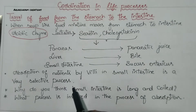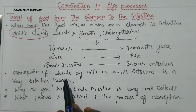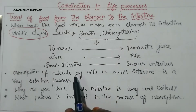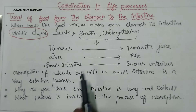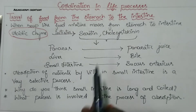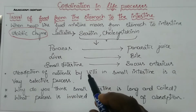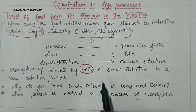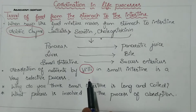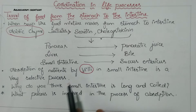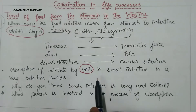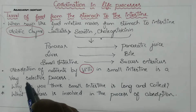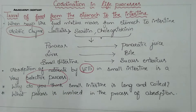After completion of digestion, absorption of nutrients takes place. The digested nutrients have to get absorbed into the blood. That process is a selective process - the substances which are required for our body are selectively absorbed through the walls into the blood.